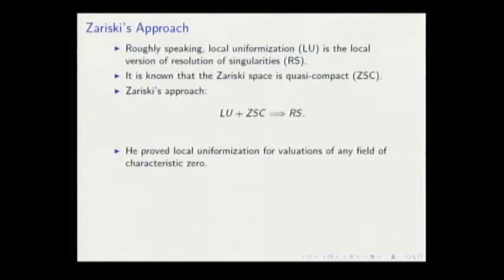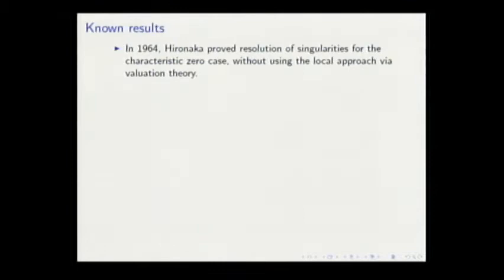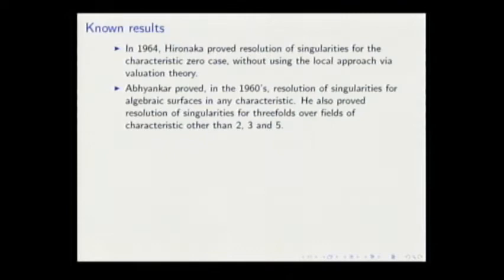Zariski proved way back in the 1940s that local uniformization holds for valuations over a field of characteristic zero. He did this gluing for low dimensions, dimensions two and three.